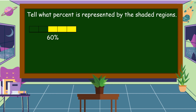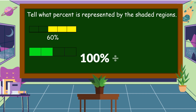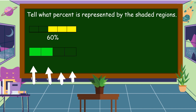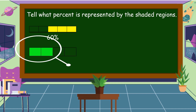For the next figure, it is divided into four equal parts. 100 percent divided by four is equal to 25 percent — each part is equal to 25 percent. What percent is the shaded region? The answer is equal to 50 percent.